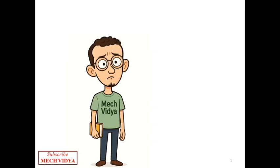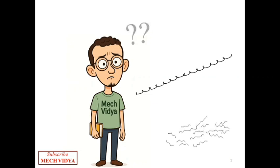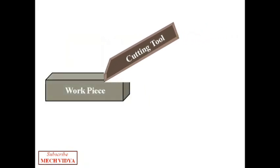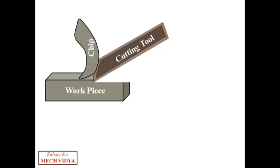Why does metal sometimes peel off smoothly and other times break like tiny chunks? Today, let's break down how chips are formed during machining. When a cutting tool moves across a workpiece, it applies shear force. This force causes the material to deform and separate as chips.